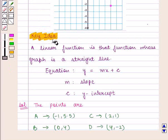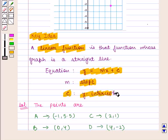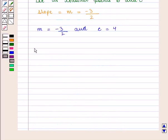From the key idea we know that a linear function is that function whose graph is a straight line and its equation is given by y is equal to m into x plus c, where m represents the slope of the line and c is the y-intercept. So here the linear relationship is given by